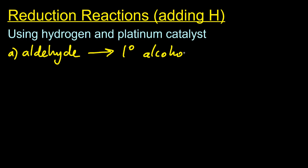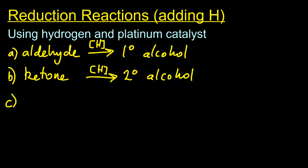There are four that you need to know. You can reduce an aldehyde to a primary alcohol, though square brackets H means reduction. You can reduce a ketone to a secondary alcohol. Thirdly, you can reduce a carboxylic acid to a primary alcohol.